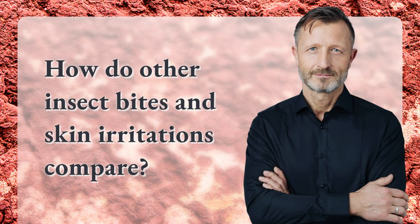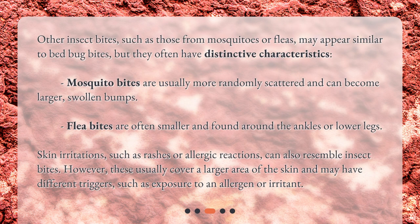How do other insect bites compare? Other insect bites, such as those from mosquitoes or fleas, may appear similar to bed bug bites, but they often have distinctive characteristics. Mosquito bites are usually more randomly scattered and can become larger, swollen bumps. Flea bites are often smaller and found around the ankles or lower legs.